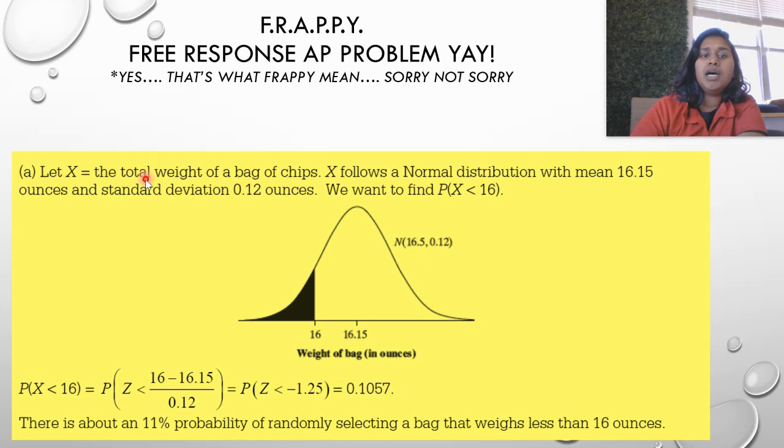They told me it was normal, they gave me the mean and the standard deviation, so I really am ready to start this question. Here is that solution. We're specifically finding a probability where the weight of the bag is less than 16 ounces. X is the weight of my bags. I've labeled my normal distribution curve, put my approximate 16, and shaded in the area I want, less than 16.